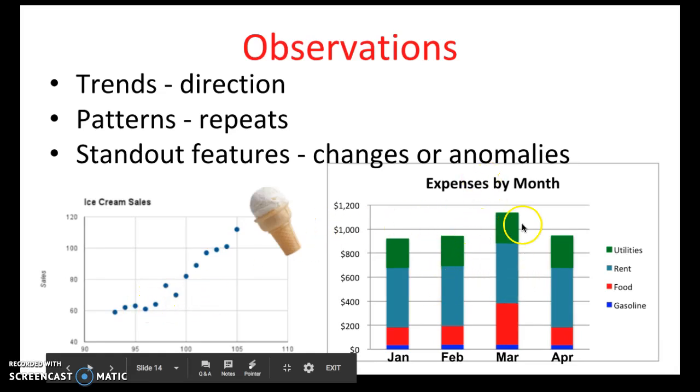Anomalies are things that are out of the ordinary. So if you look at the expenses by month, you'll notice that the food, the price for food, is about the same in January, February, and April. Only March, the amount that was spent on food is much larger. It's almost double.